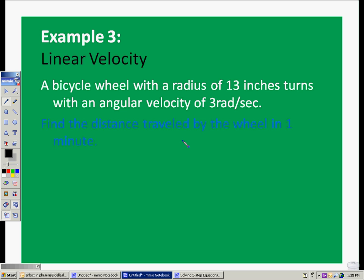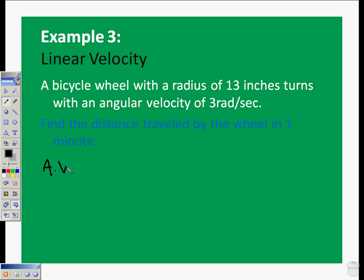In order to do this, we need to know a couple of things. It's giving us an angular velocity of 3 radians per second. So if we go ahead and look at angular velocity, we know that that's 3 radians in 1 second.